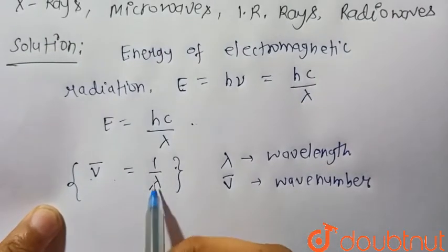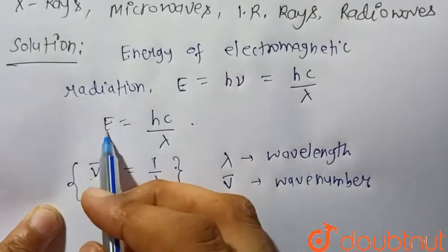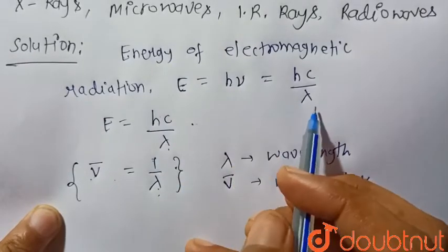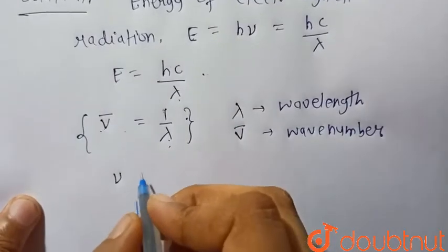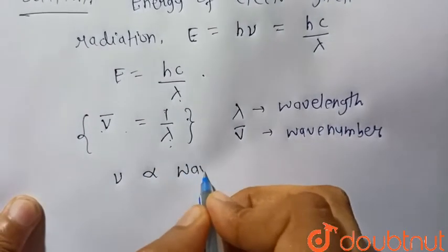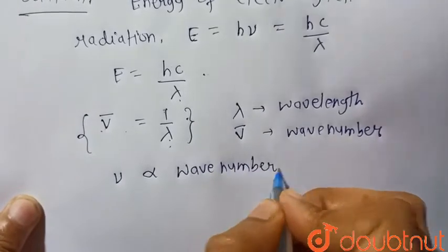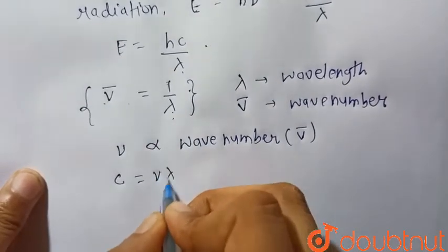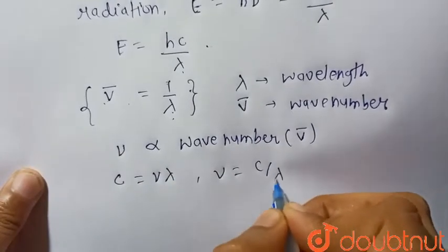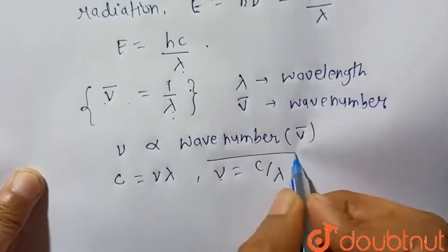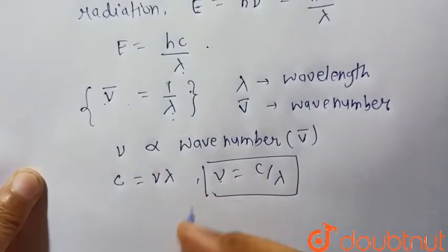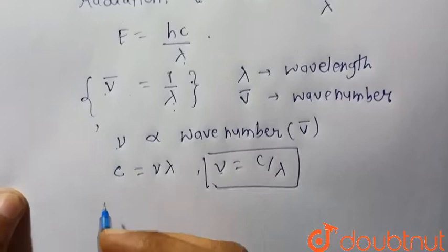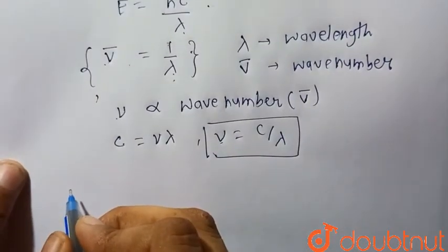Wave number is inversely proportional to wavelength, and energy is also inversely proportional to wavelength. Since c equals νλ and ν equals c/λ, frequency is also inversely proportional to wavelength. Therefore, frequency is directly proportional to wave number v̄.